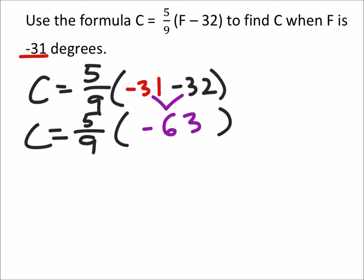And of course, the Celsius is 5 ninths of that. So I'm going to make that a fraction just so we can multiply these. So I got 5 times negative 63, which would be negative 315, and 9 times 1 is 9. That's our Celsius.